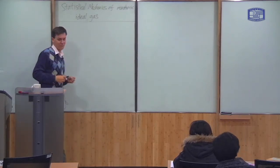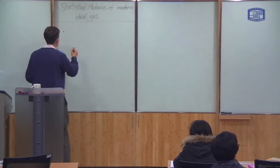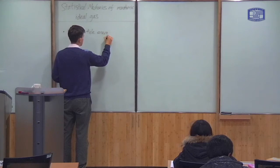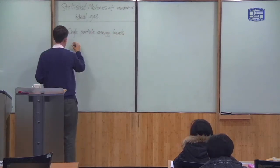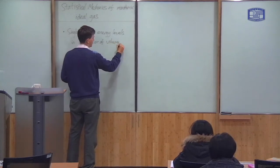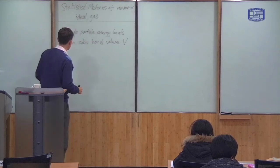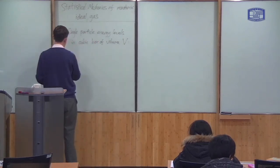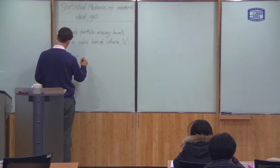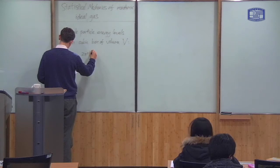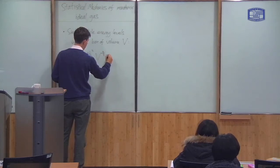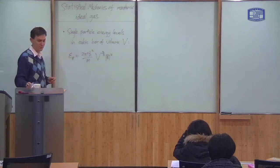We've already worked out, just after the midterm exam, what are the energy levels of particles in a gas — in a cubic box of total volume V. We computed these and found that they're labelled by a vector of integers n. The result was that the energy level epsilon_n equals 2π²ℏ² over m, times V to the minus two-thirds, times n squared, where n is a vector of integers.